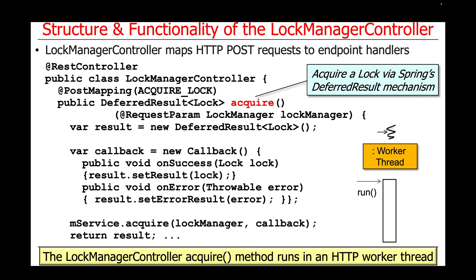This is a snapshot of what the acquire method looks like in the LockManager controller. It's going to acquire a lock using Spring's DeferredResult mechanism. The LockManager controller's acquire method — this implementation — will run in an HTTP worker thread, as shown in the visualization on the right-hand side of the slide. This code runs in a thread from the pool of threads, and that's a limited pool, so we don't want to tie it up for too long.